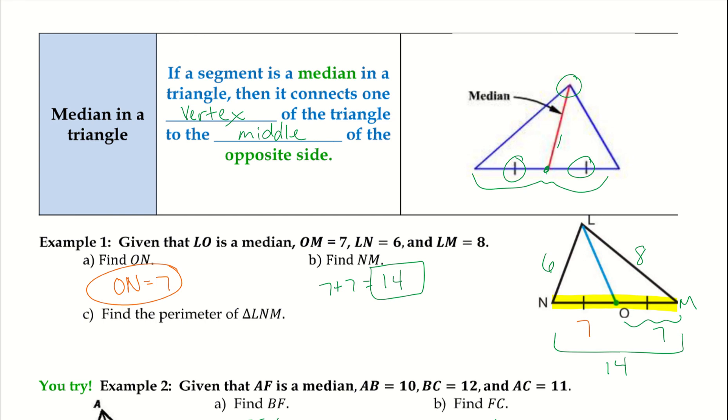Then find the perimeter of triangle LNM. That is this entire triangle, so remember when we're trying to find a perimeter we add up all of the sides together. So I'm going to take 6 plus 8 plus 14, and that's going to give me 28.